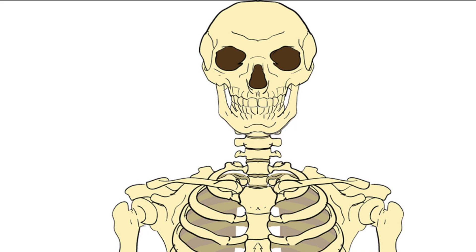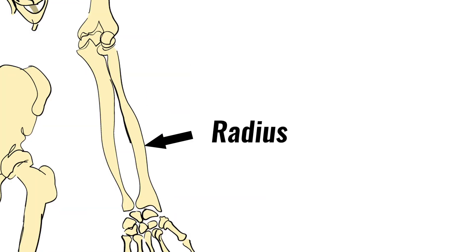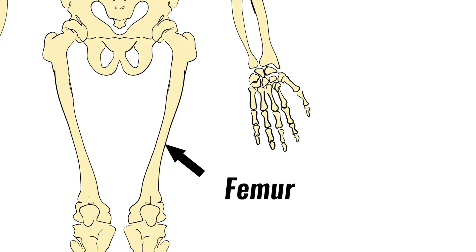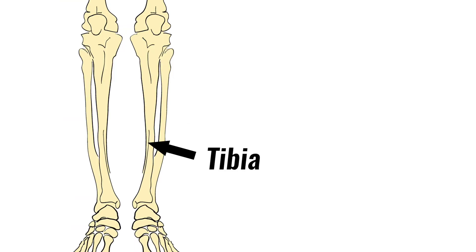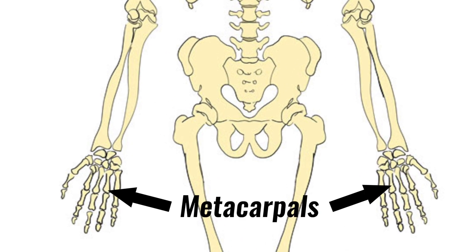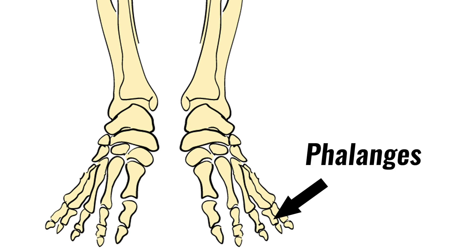Long bones are some of the longest bones in the body. For example the humerus, radius, ulna, femur, tibia and fibula. But long bones are also some of the smallest, such as the metacarpals in the hand, metatarsals in the foot and phalanges which make up your fingers and toes.